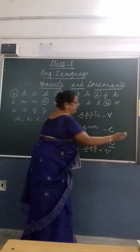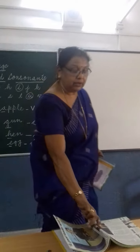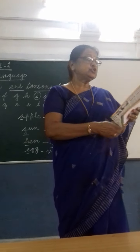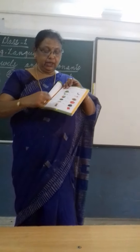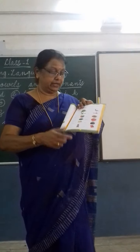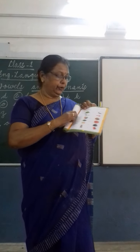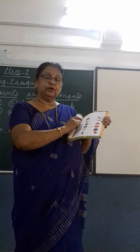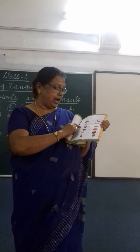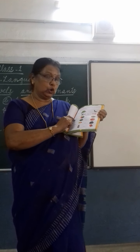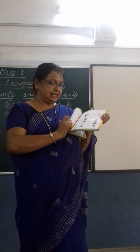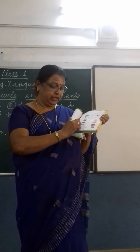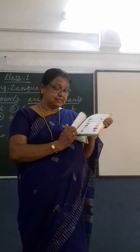Like this, in your workbook, page number 3, some exercises are given. You look at the picture and write C or V for the first letter of each word. The first one has been done for you. First word is belt — T is a consonant, write C. Next is far — F is a consonant, write C. Claw — C is a consonant, write C. Lime — L is a consonant, write C. Umbrella — U is a vowel, write V. And owl — O is a vowel, write V.